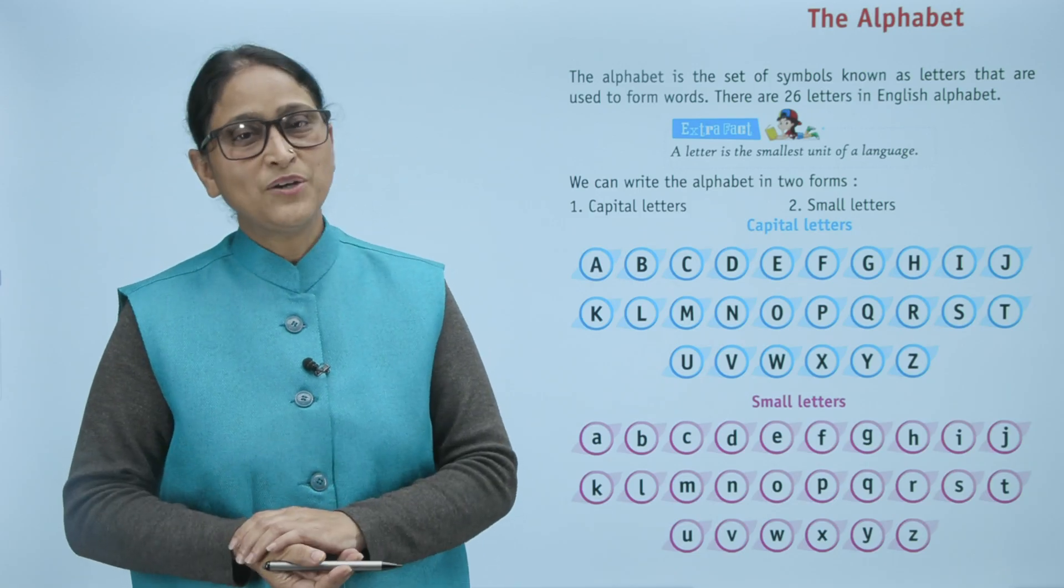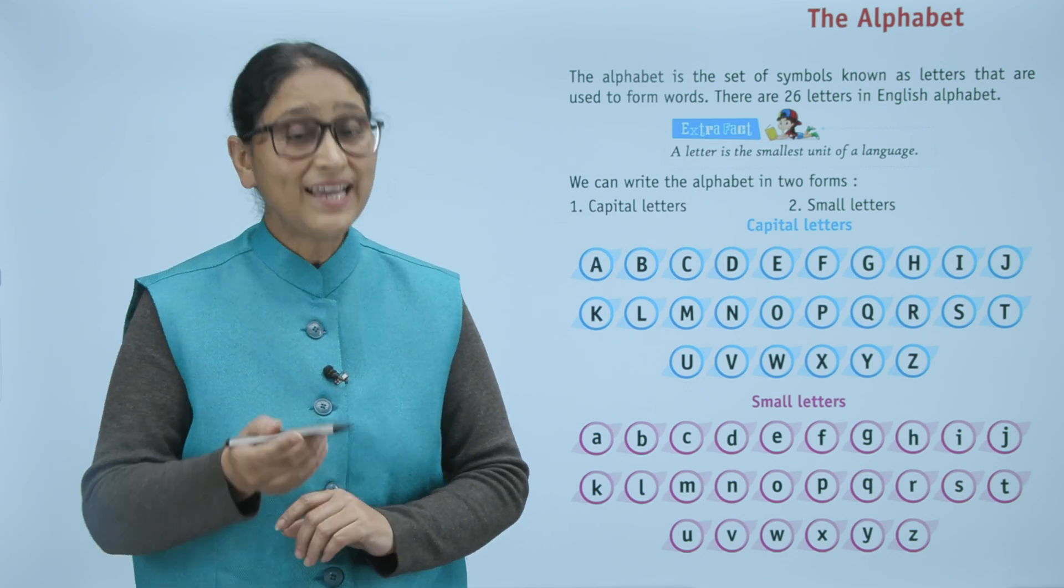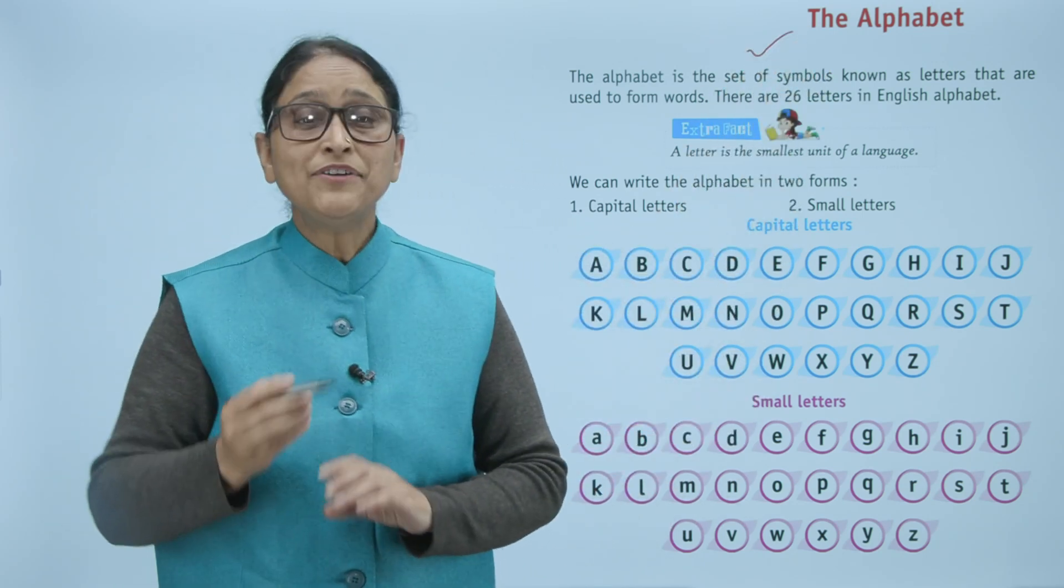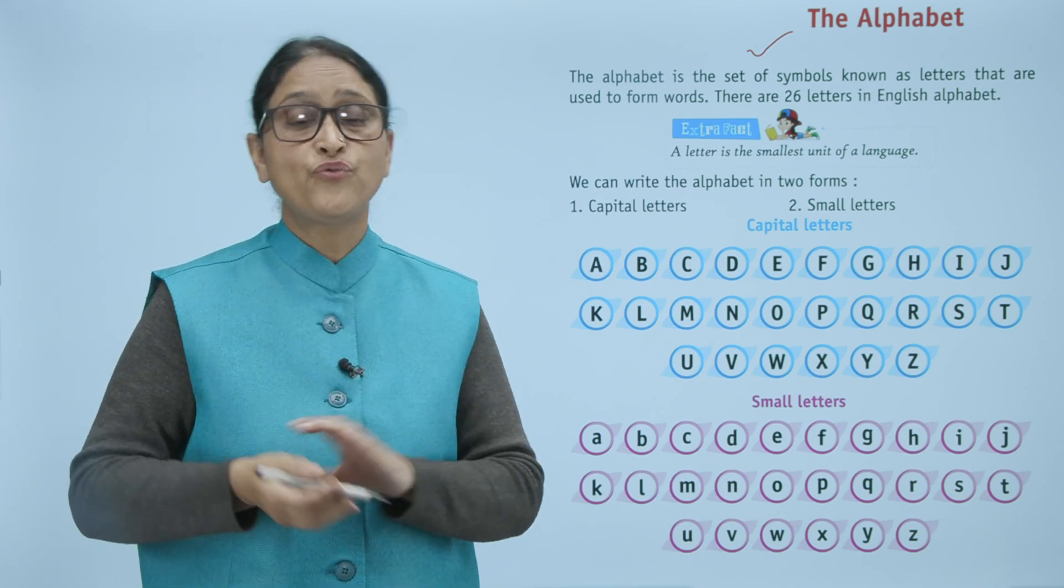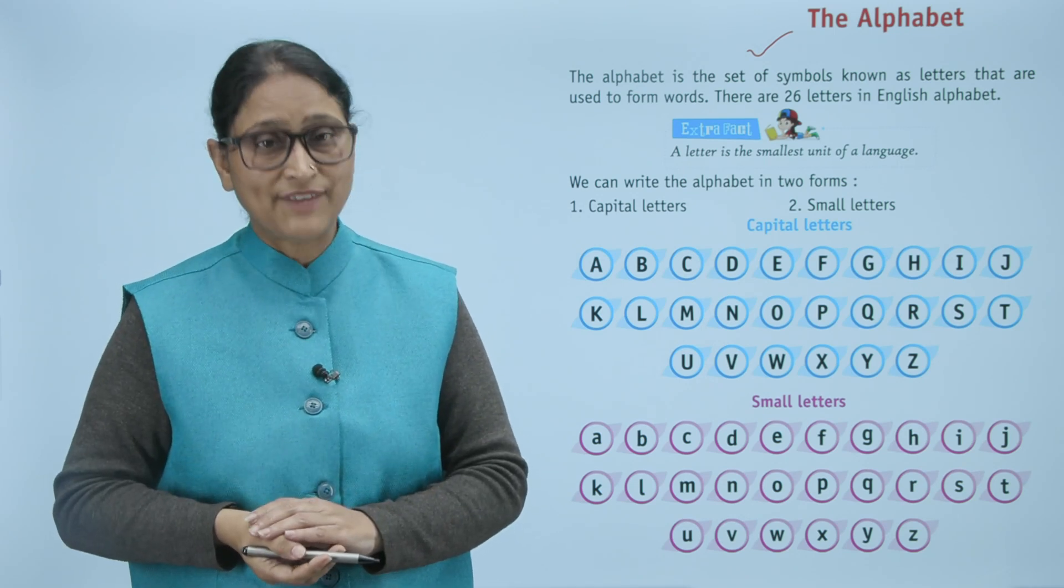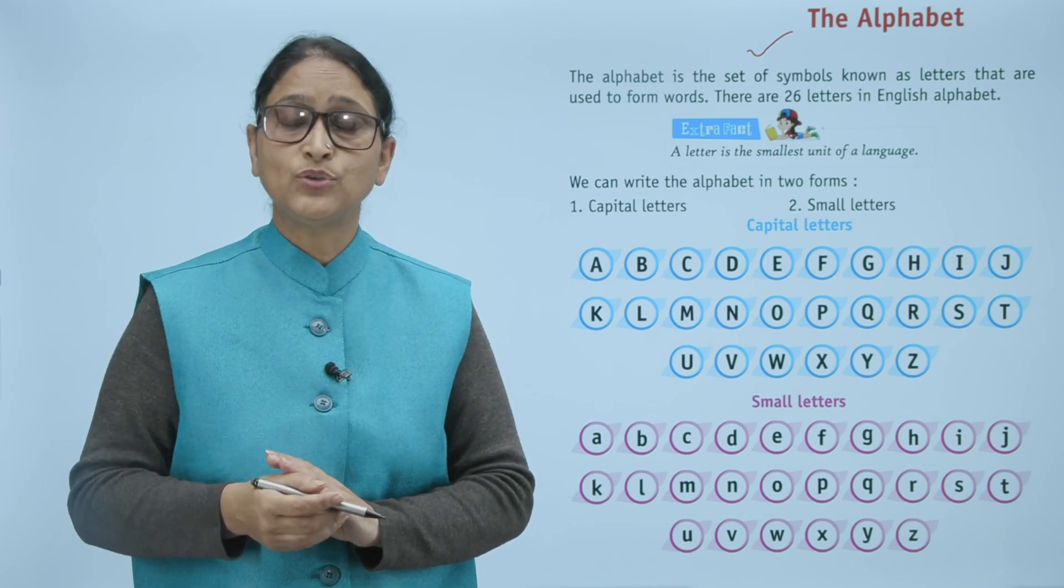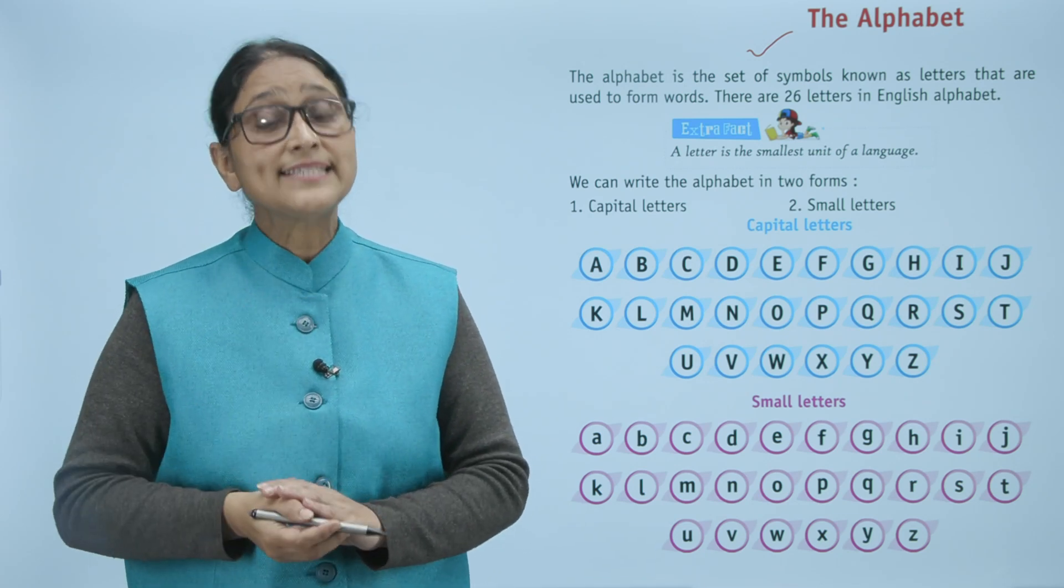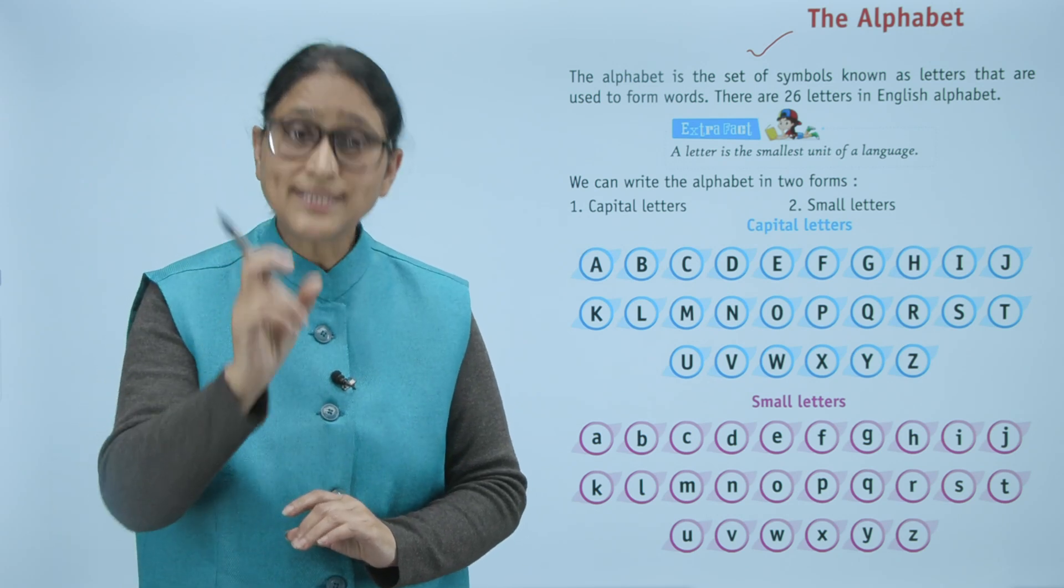Hello children, how are you? I hope you all are doing good. Now we will do the alphabet. The alphabet is the set of symbols known as letters that are used to form words. There are twenty-six letters in the English alphabet. A letter is the smallest unit of a language.